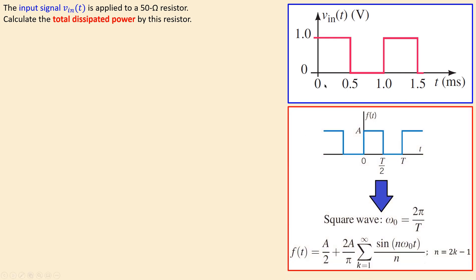Before moving on, let's look at a table of the Fourier series for this particular square wave. The table gives amplitude A — which is 1 volt in this case — and period T, which is 1 millisecond. The fundamental frequency omega_0 is 2π over the period, so with T = 0.001 seconds, omega_0 = 2π / 0.001 = 2000π radians per second.